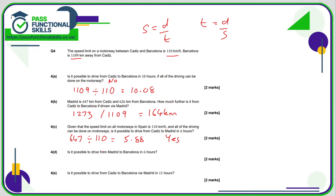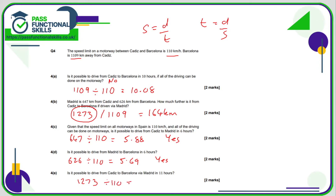Is it possible to drive from Madrid to Barcelona? Madrid to Barcelona is 626, so 626 divided by the maximum speed limit of 110 comes to 5.69 hours — yes, that's possible because it's within 6 hours. And can you drive from Cadiz to Barcelona via Madrid in 11 hours? The distance is 1,273, and dividing by the maximum speed limit gives 11.57 hours, which is longer than 11 hours, so the answer is no.